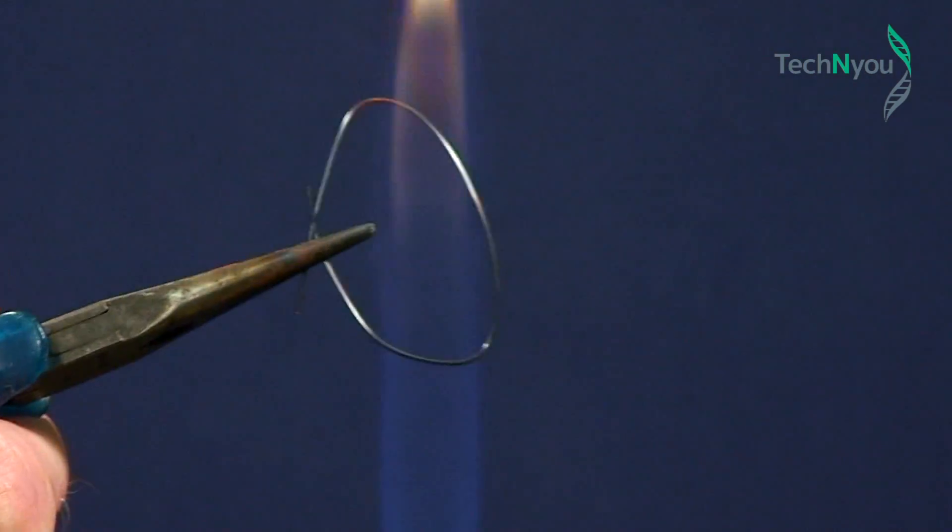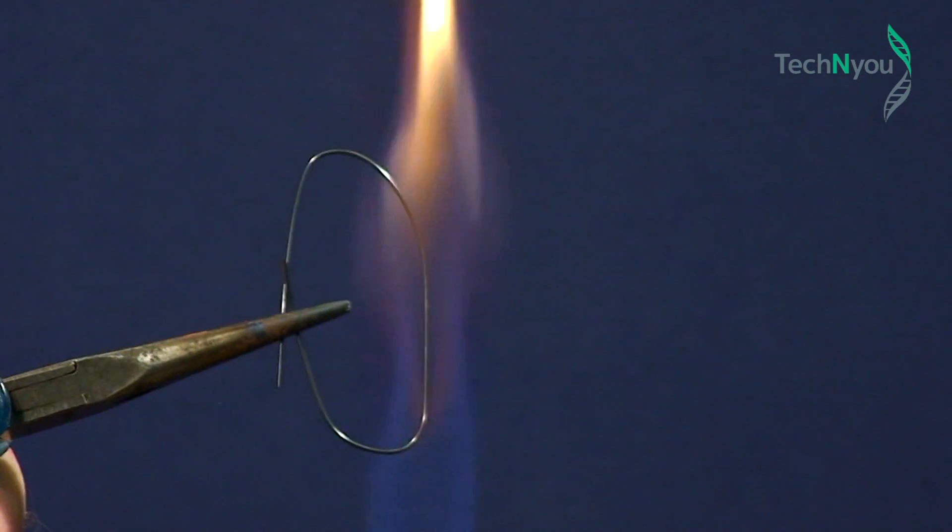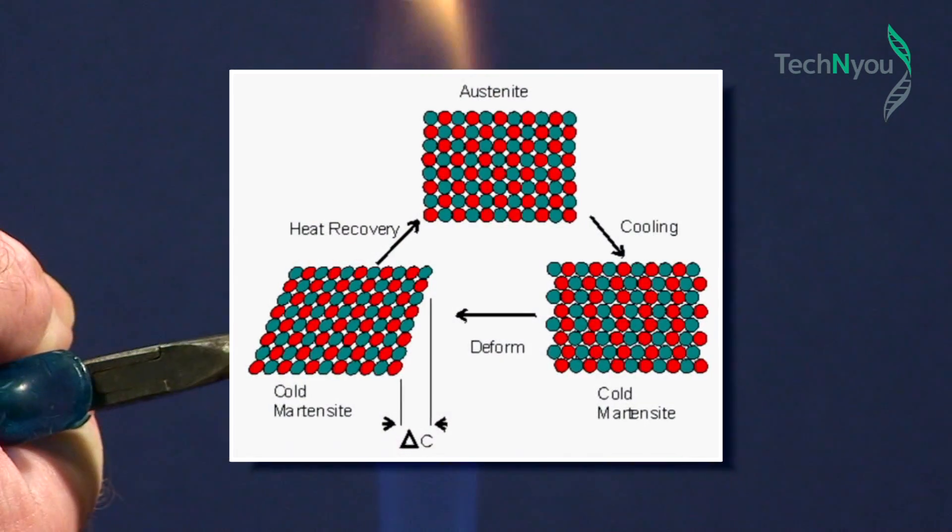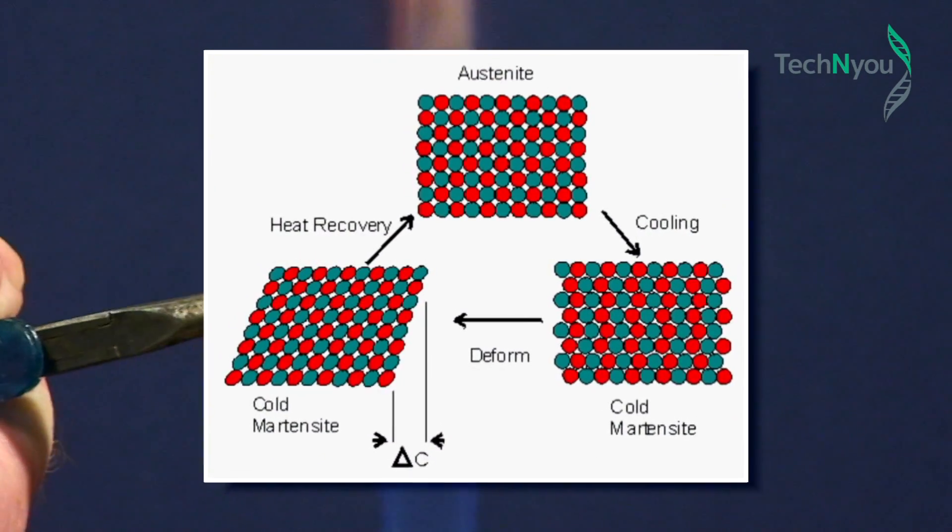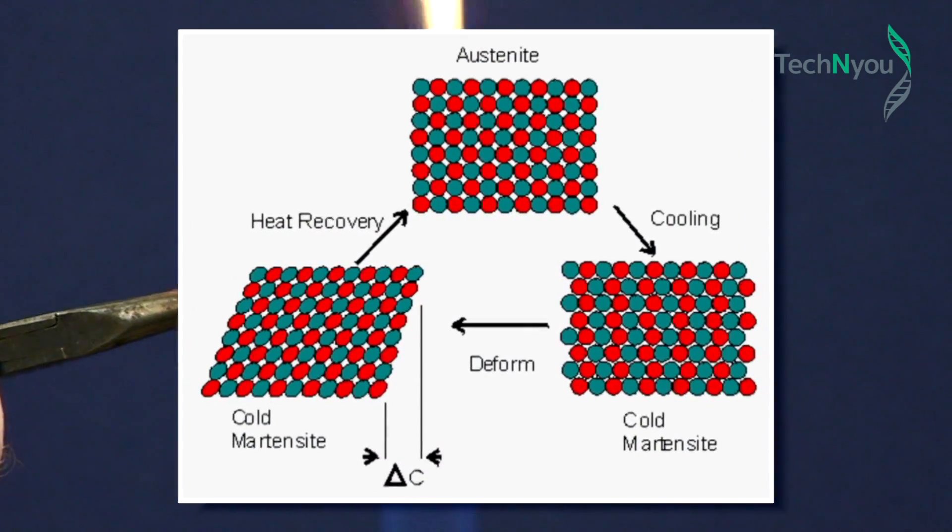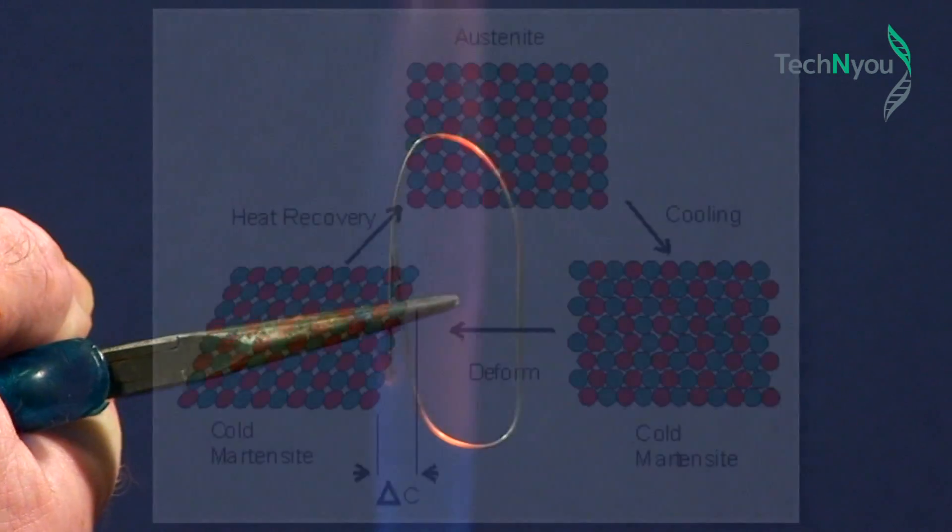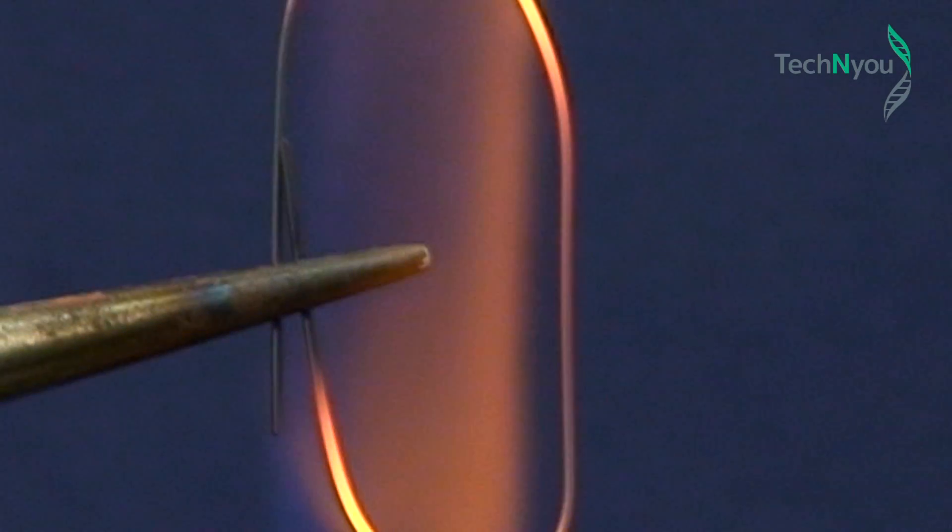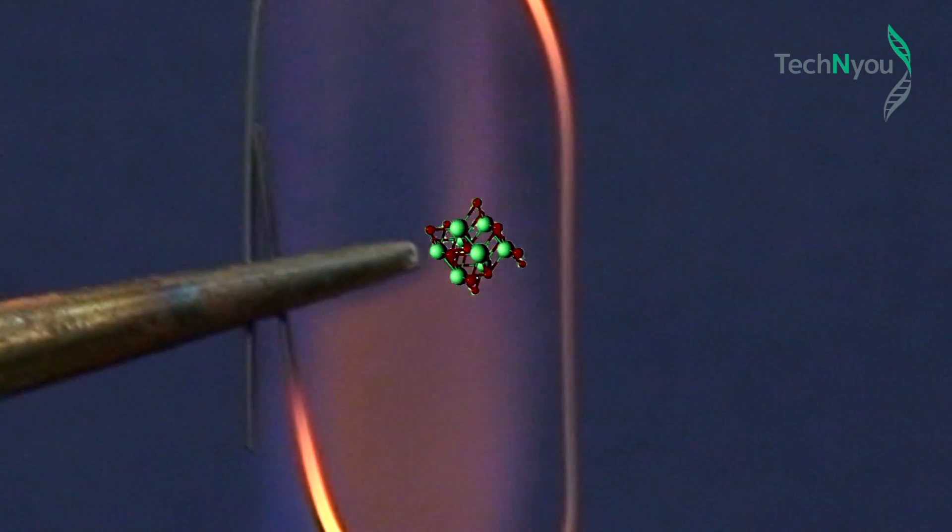We can see the wire heating. What we can't see is the crystal structure changing. This is what gives Nitinol a new memory. We are reprogramming its structural behavior at a specific temperature so the Nitinol atoms remember this shape.